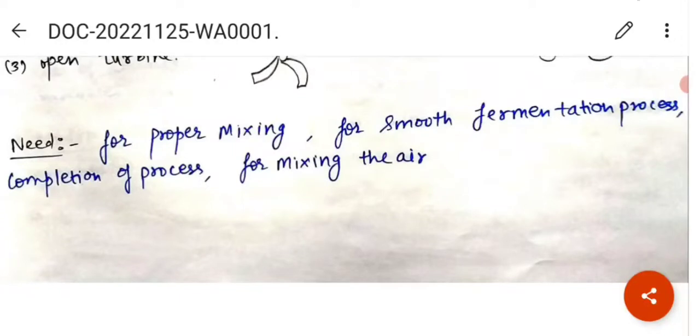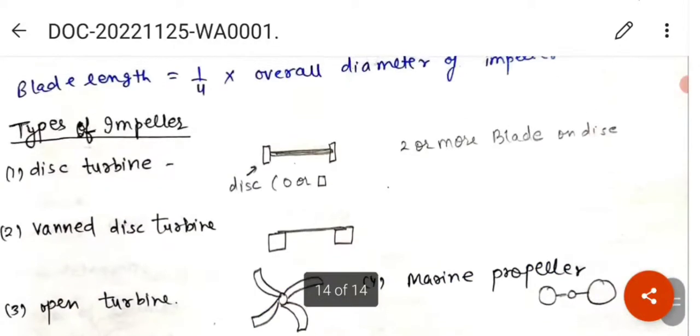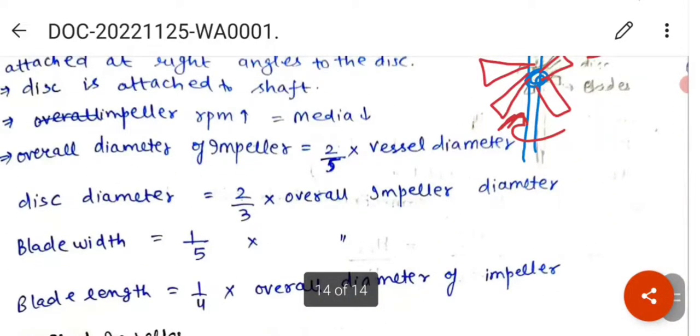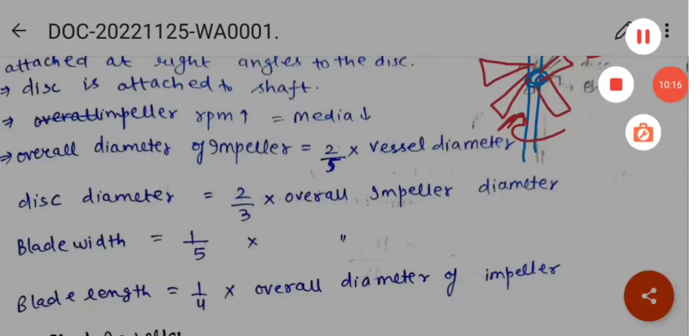Agitation is needed for proper mixing for smooth fermentation process, for completion of the process, for mixing the air so that the sterilized air or oxygen that we supply through spargers is properly distributed over the entire culture. Proper mixing requires agitation. That's all for today, thank you and have a wonderful day.